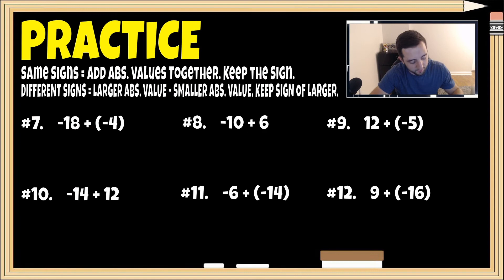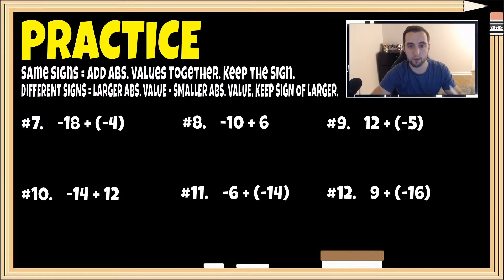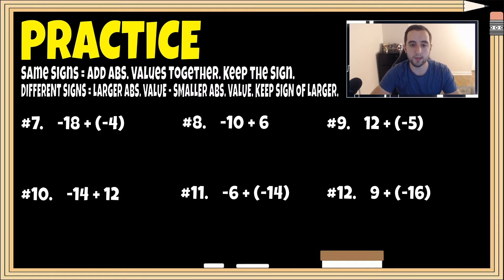Before you finish this video, I have six problems for you to practice. I encourage you to pause the video and try problems seven through 12 on your own using absolute value, paying attention to the same sign rule and the different sign rule. You can even backtrack to the previous problems we did together. When you think you have all the answers, come back and play the video to check. Assuming you've tried seven through 12, let's go ahead and check your answers.